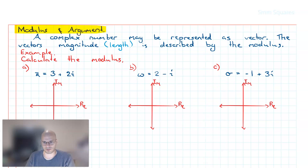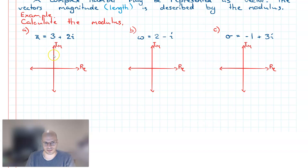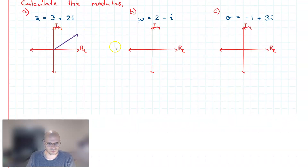A complex number may be represented as a vector. A vector's magnitude, or in other words its length, is described by the modulus. Consider the example z equals 3 plus 2i. We can represent this complex number as a vector. It is composed of a real component and an imaginary component, which we can plot on the Argand diagram — the real component on the horizontal axis and the imaginary component on the vertical — roughly three units across and two units high.